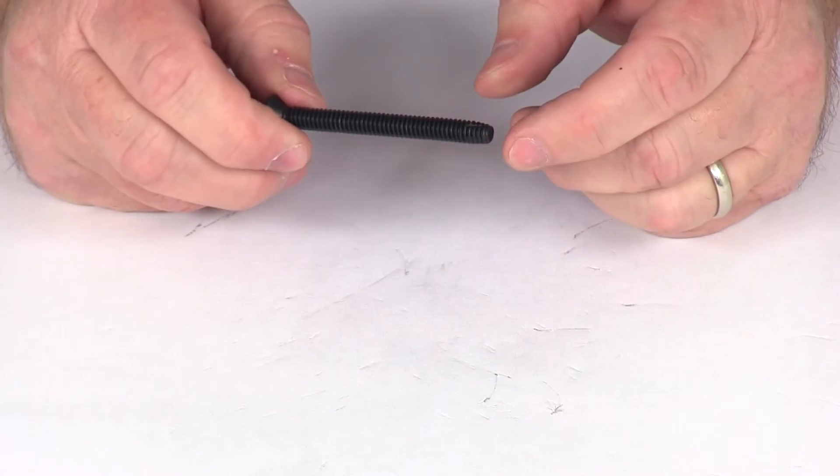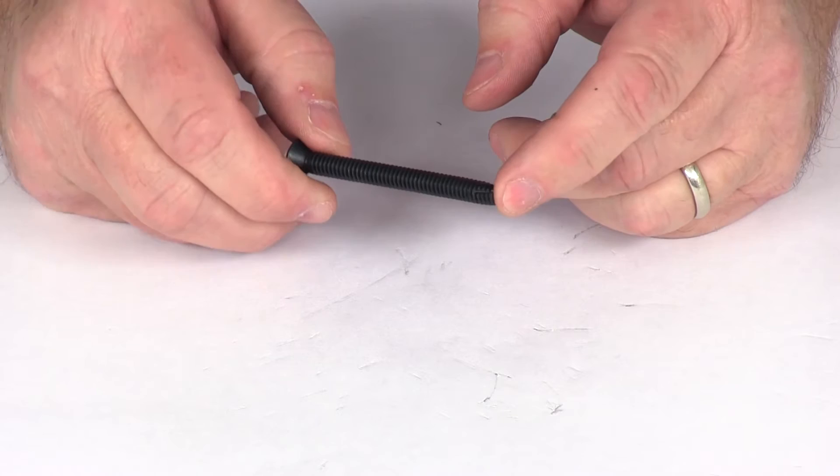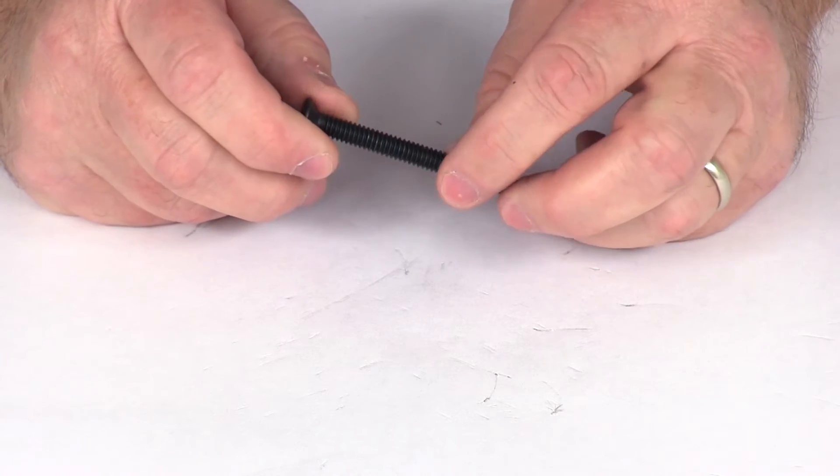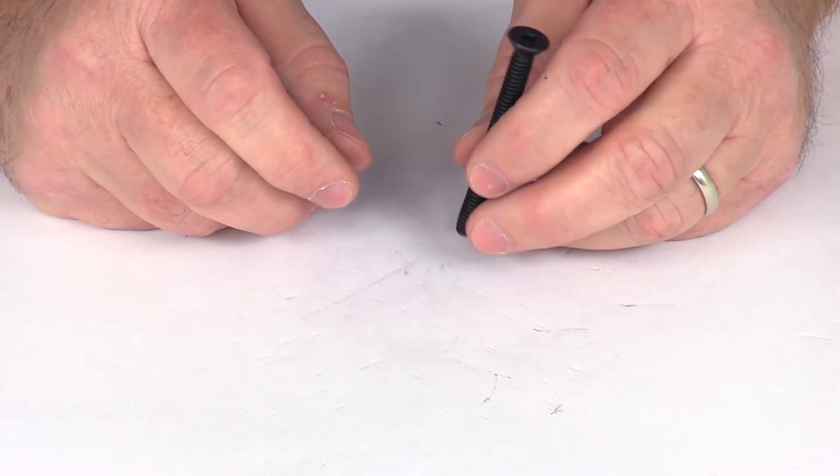This screw is designed with the type F point and that's designed for securing your wood floor to heavy gauge sheet metal, aluminum, cast iron and zinc.